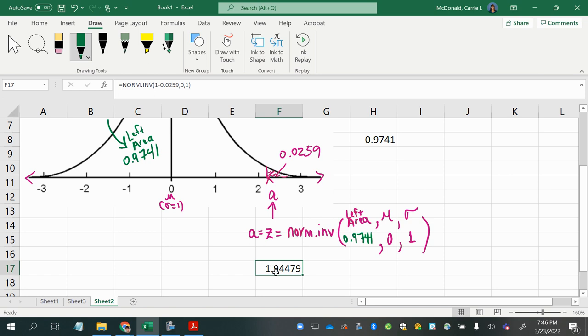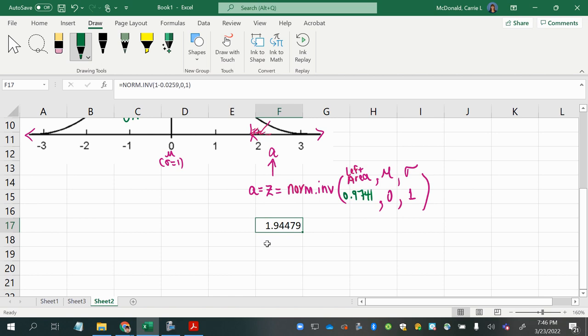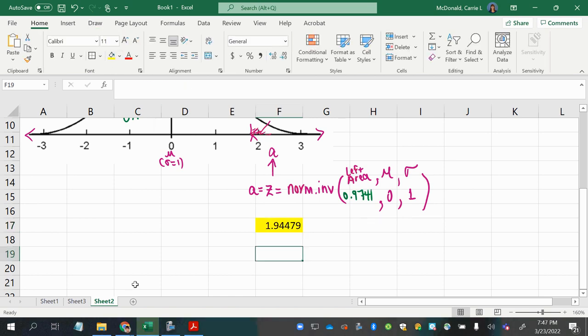All right, now that makes sense because I knew I was looking for a value that was positive and it's just a little further to the left than I imagined it would be. But it's still a good answer that makes sense according to how I've sketched everything out. And so that's my final answer using the Excel function norm.inverse.